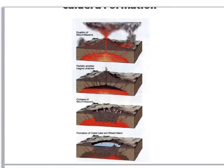Here's a diagram showing how a caldera forms. We have an active volcano currently erupting. When the volcano is done erupting, there's a hole or void left behind. The magma that was supporting the upper rock layers is no longer there, so the top of the volcano collapses in. At Crater Lake in particular, it filled up with water, hence creating the lake.